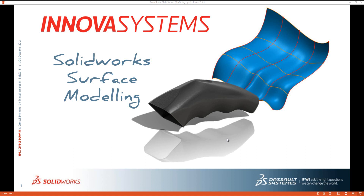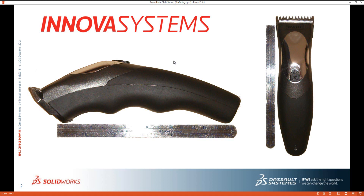In this session we're going to look at the production of this design — the body for a pair of clippers. Here are a few pictures I took earlier on, and these pictures are going to form the underlying structure for my model. I'm going to use this as a basis to model around.